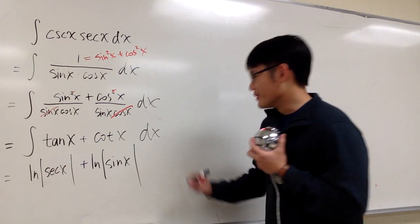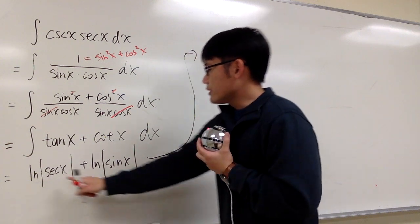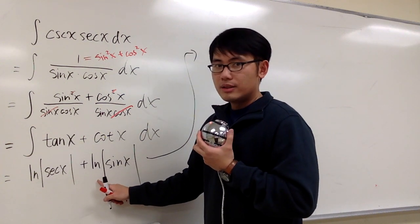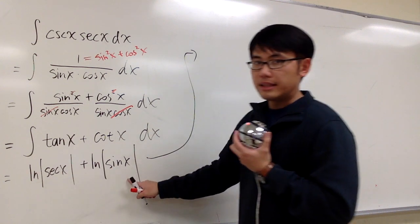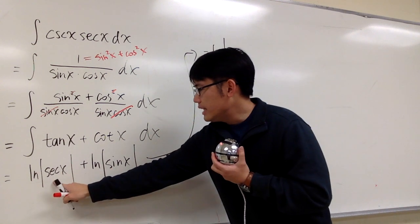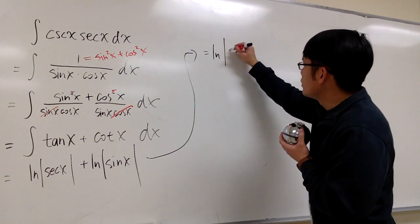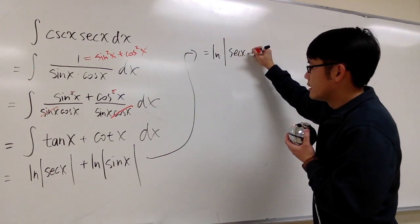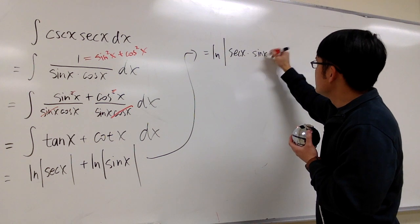First of all, we have two ln's. So we can combine the ln's together. And then we just multiply the inside. So this is the same as ln absolute value secant x times sine x. So let me write it as secant x times sine x inside of the ln.